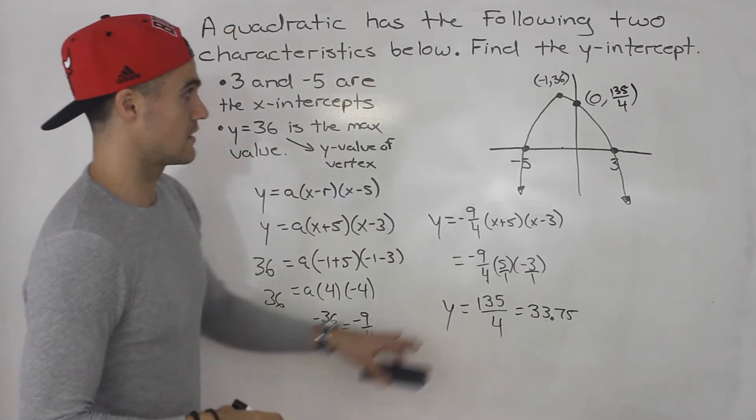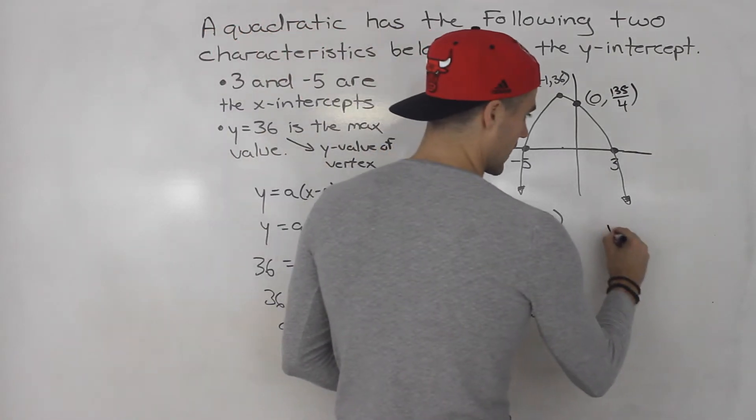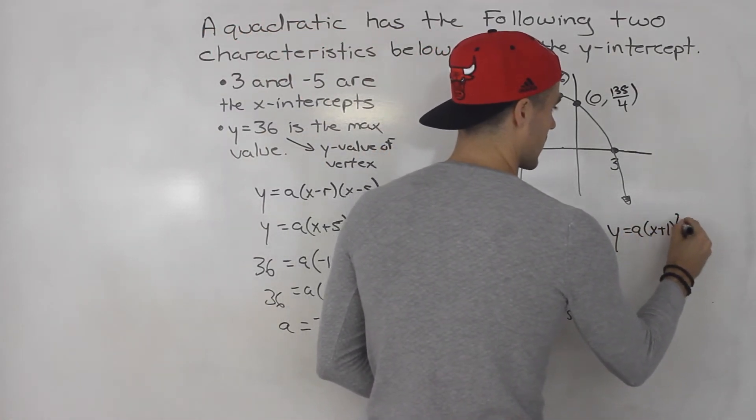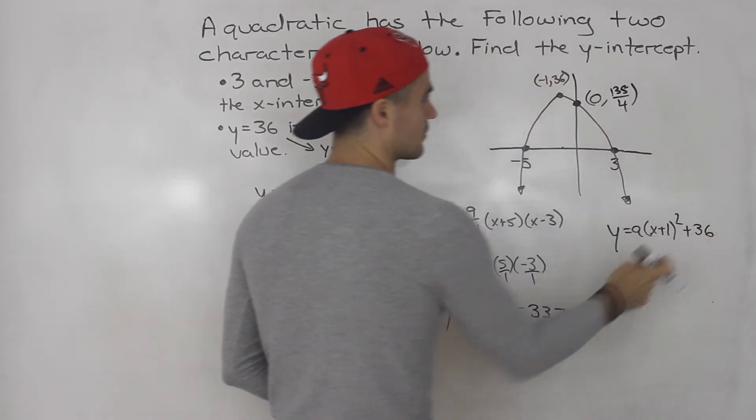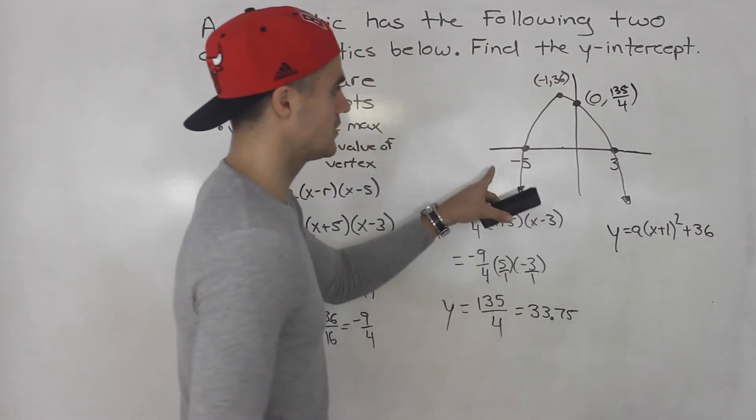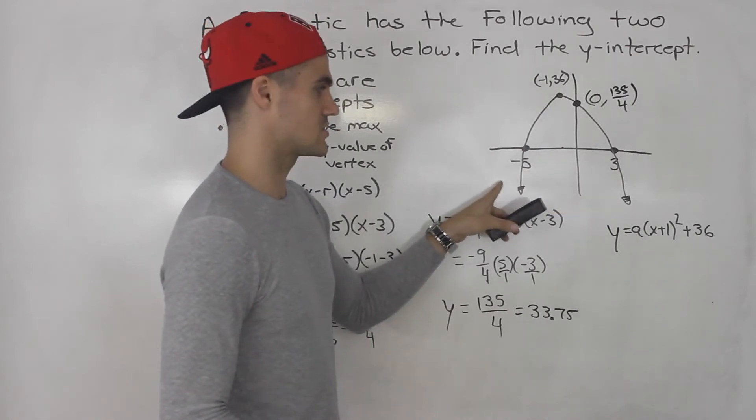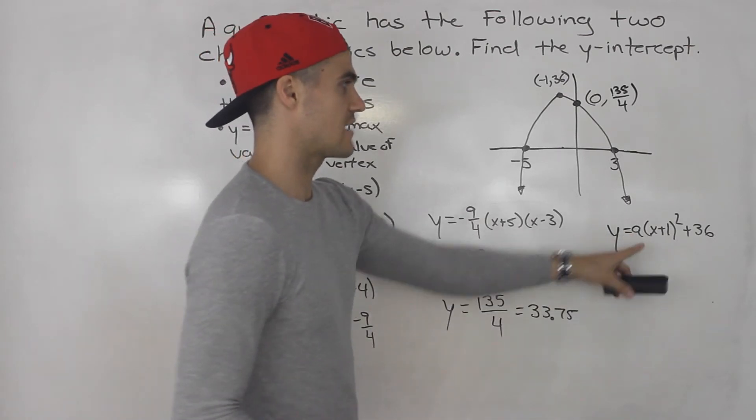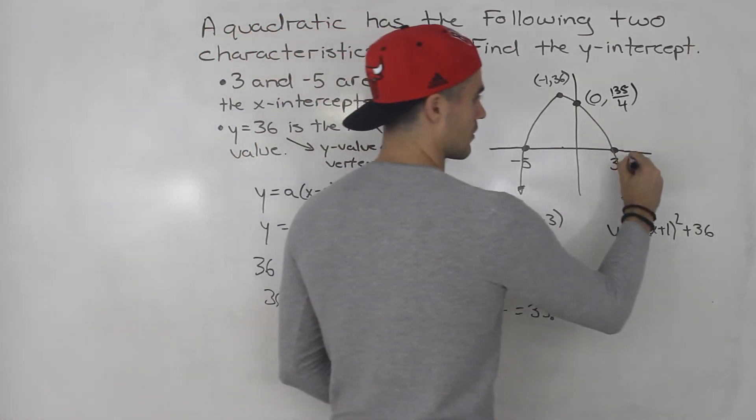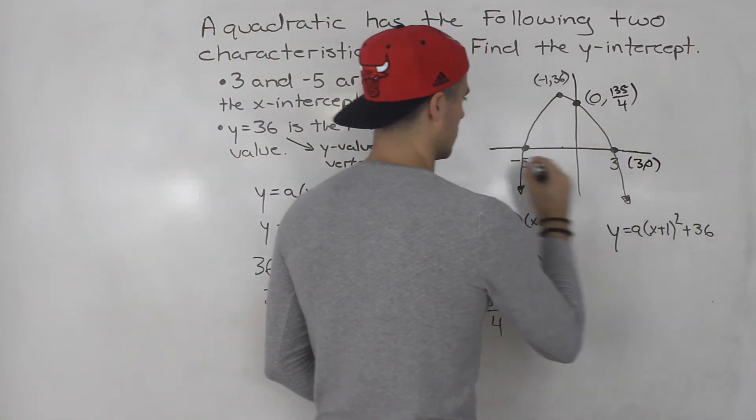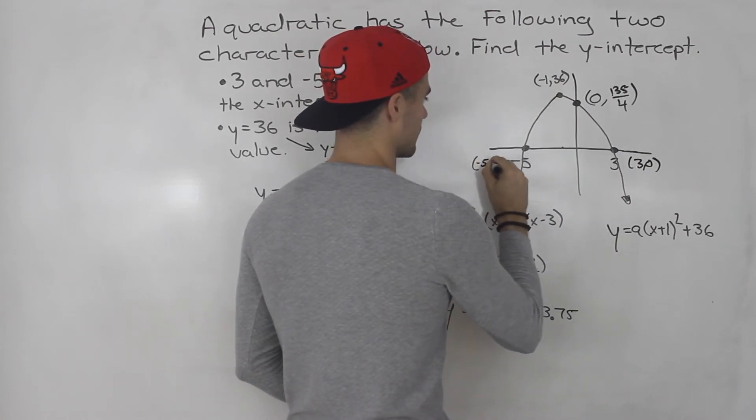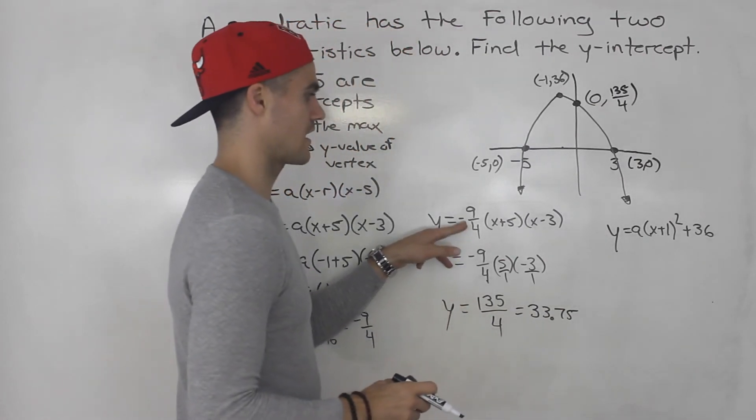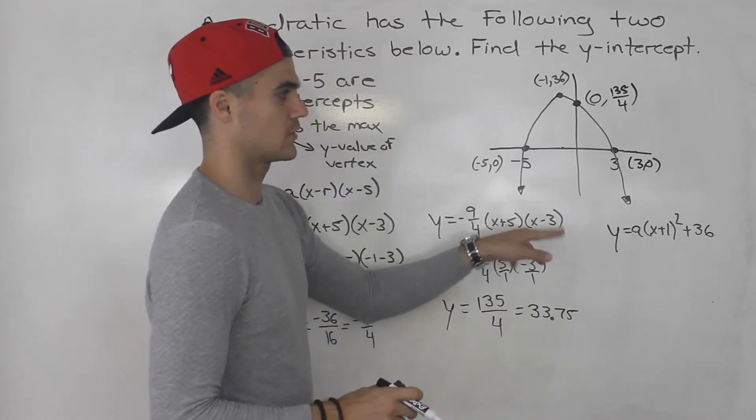Now, if you wanted to do it the other way, if you wanted to put this in vertex form, you would have y equals a, x plus 1 squared plus 36. Negative 1, 36 is the vertex. And then you could plug in one of these x-intercepts here to solve for that a value. So, you could plug in either 3 and 0, or negative 5 and 0. And you would actually end up getting the same a value, negative 9 over 4. That would go in front.